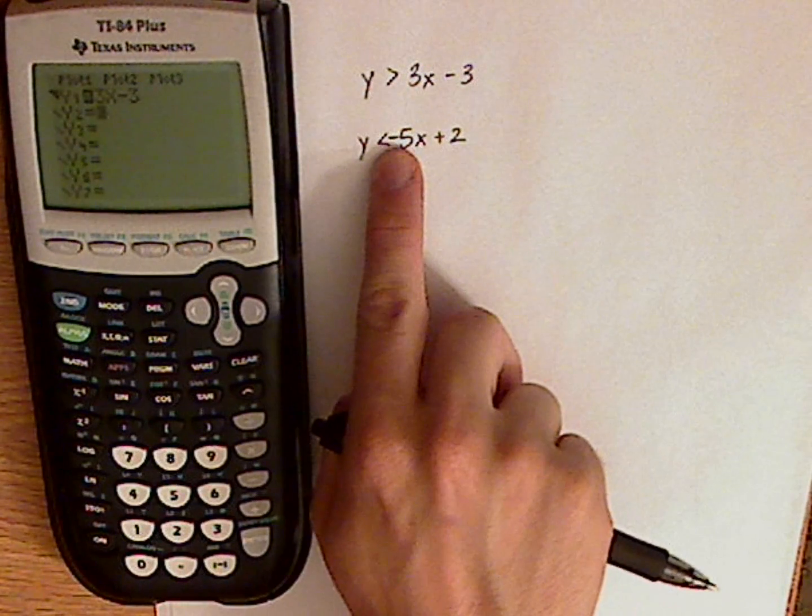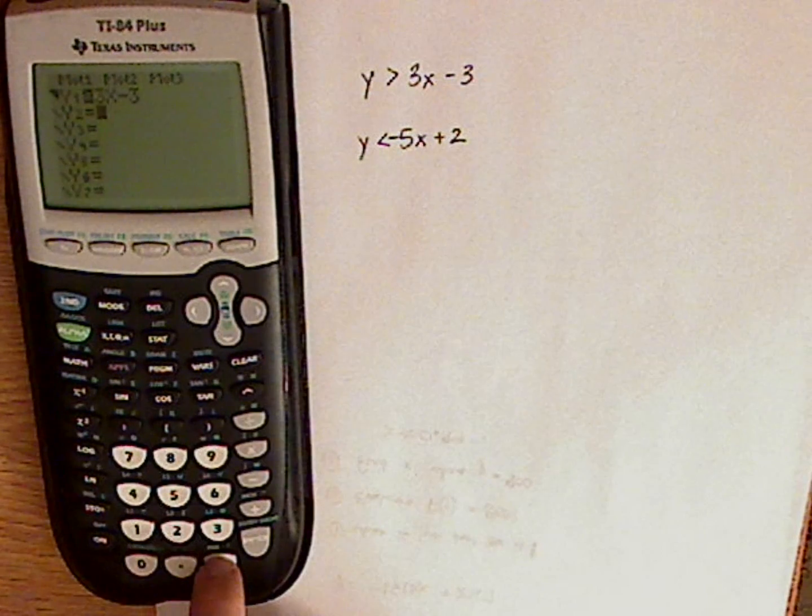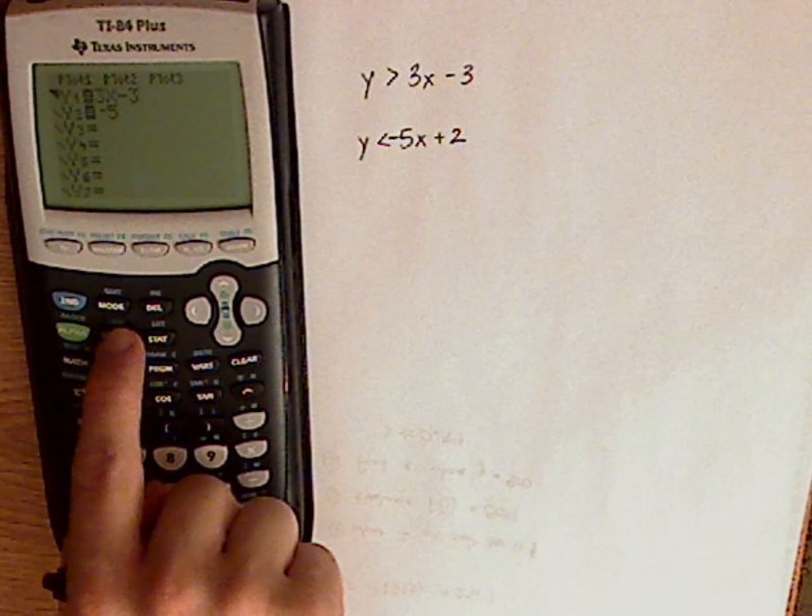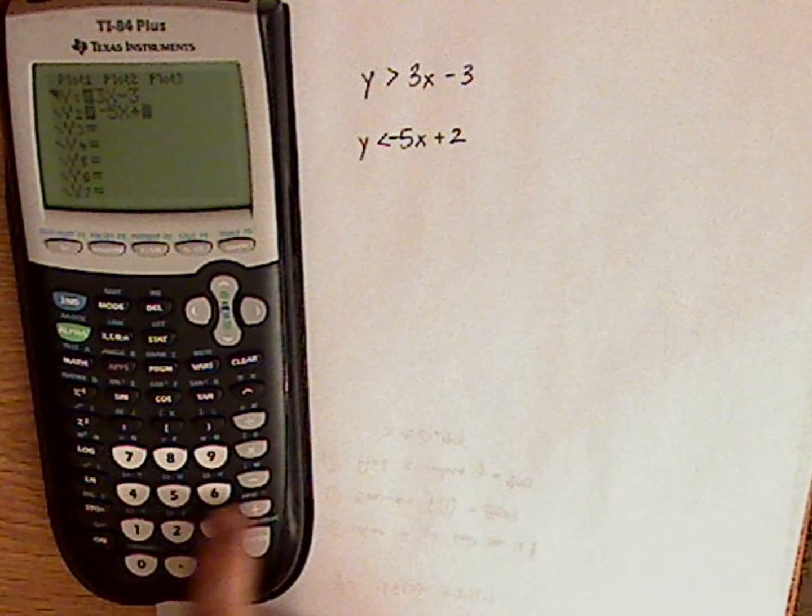So now let me type this in. That's a negative 5, so negative and then 5, variable button for x, plus 2.